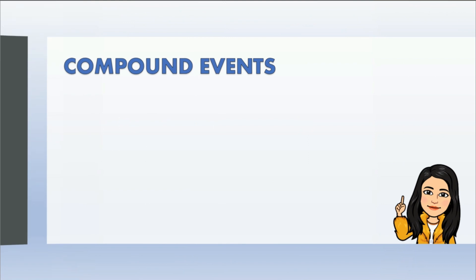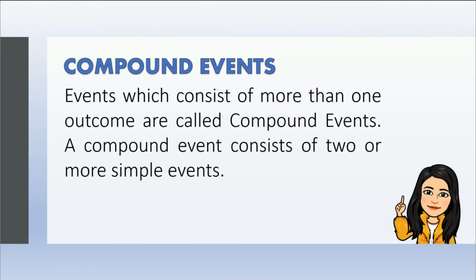Aside from simple events, we also have compound events. Events which consist of more than one outcome are called compound events. A compound event consists of two or more simple events. Let's take a look at some examples.